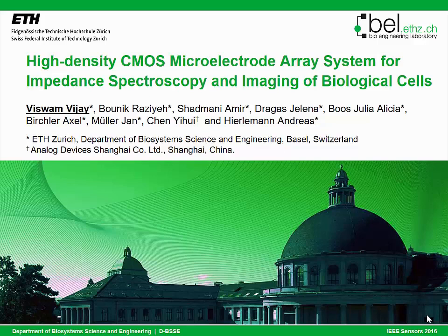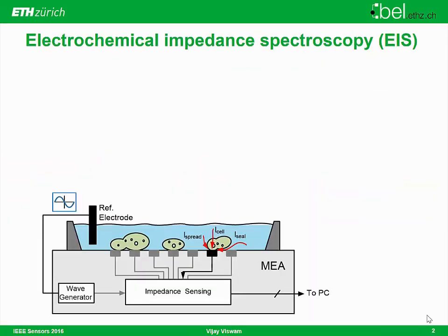Here I present a high-density CMOS-based microelectrode array Rx system with impedance spectroscopy for imaging of biological cells. The basic principle of impedance spectroscopy is that we apply a sinusoidal wave at a particular frequency to a reference electrode, and we can sense the corresponding current from a working electrode using an impedance sensing circuit integrated on-chip. The current is basically proportional to the cells sitting on top of these electrodes.